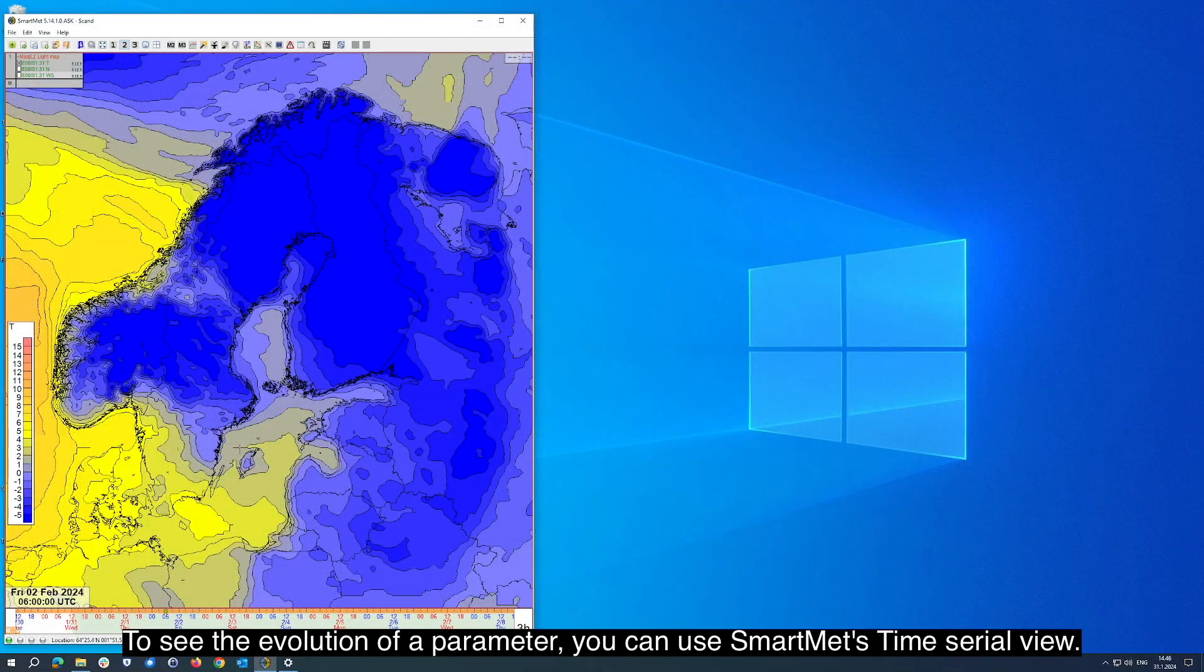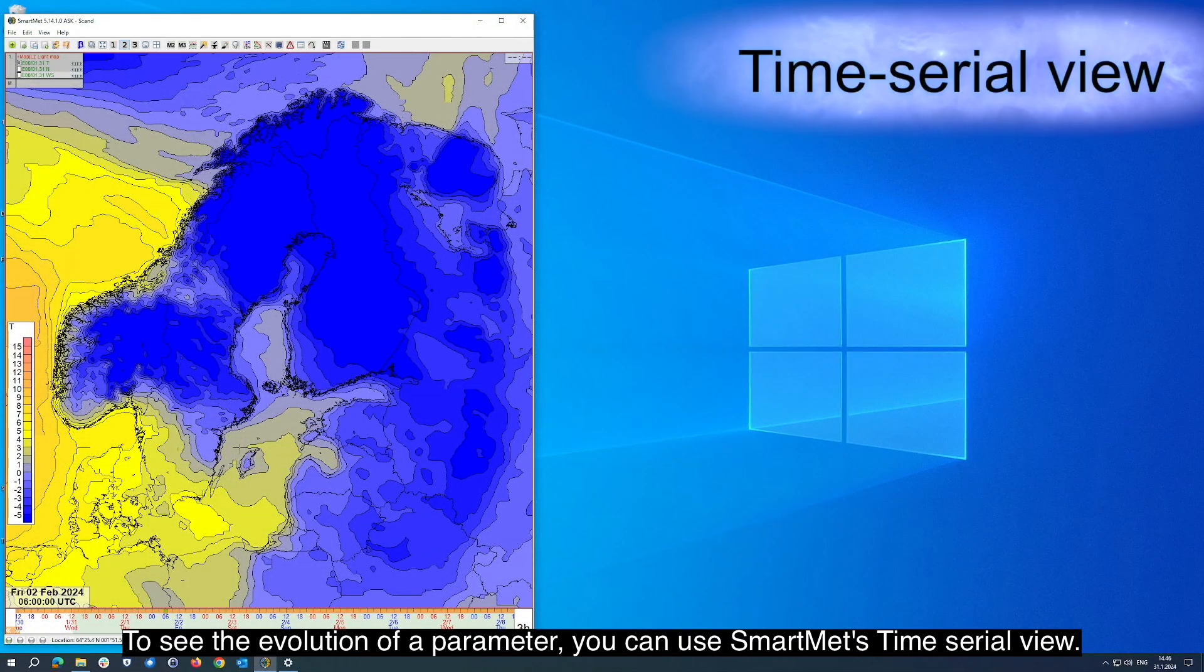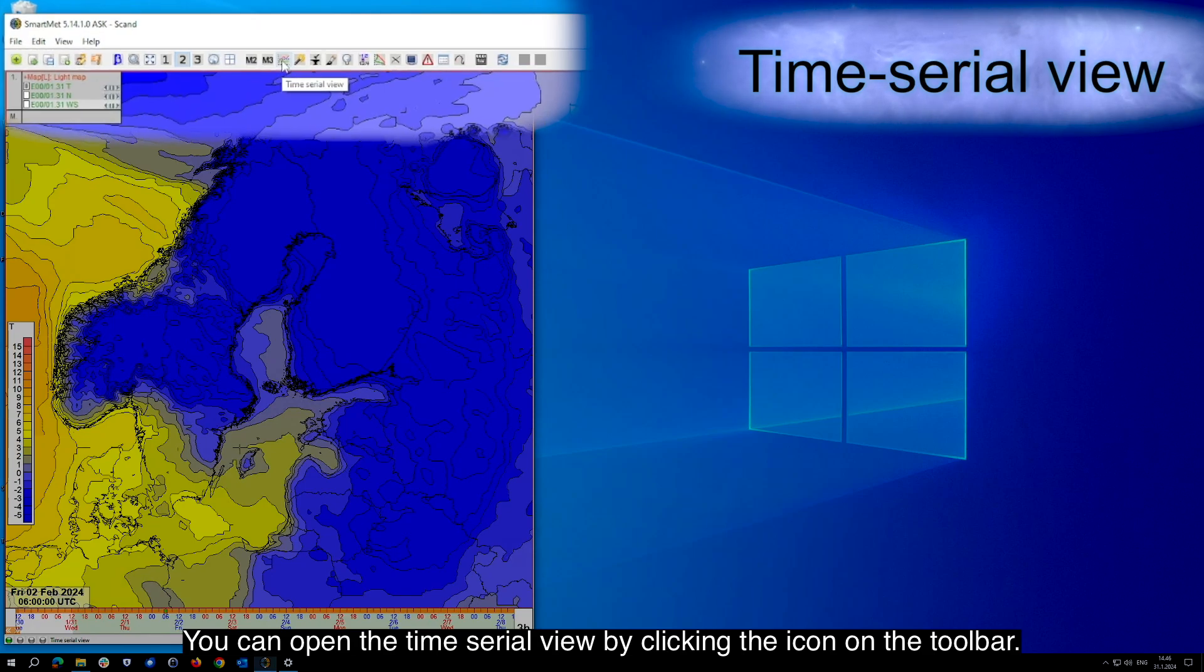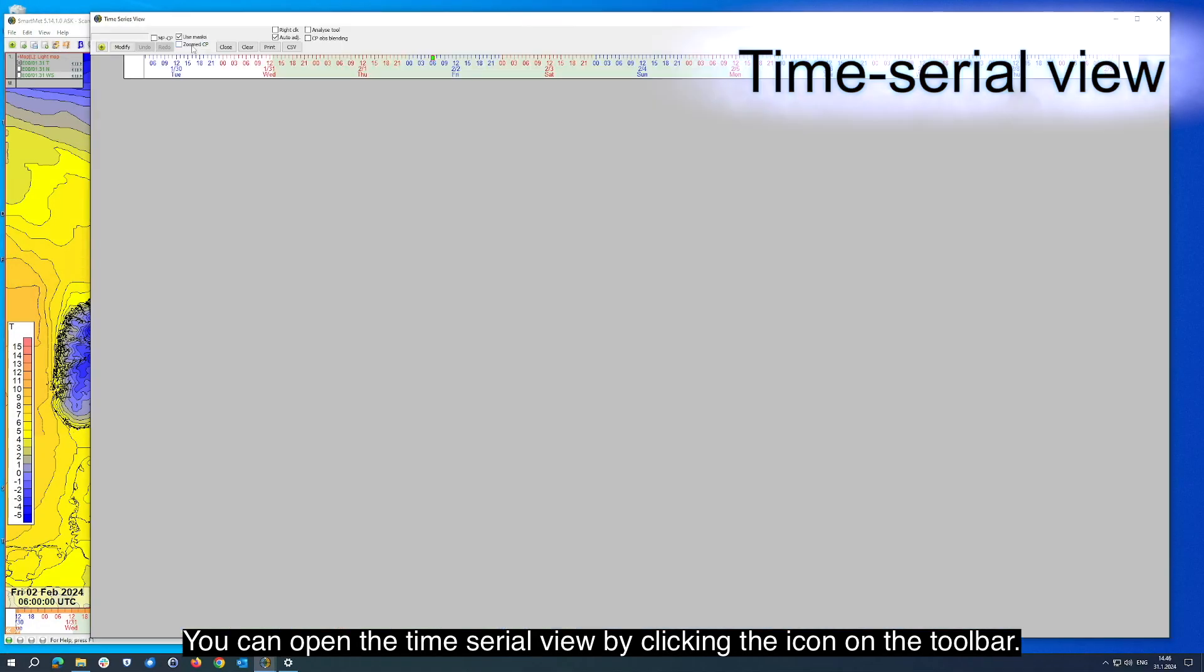To see the evolution of a parameter, you can use SmartMet's Time Serial View. You can open the time serial view by clicking the icon on the toolbar, and it should open something like this. At first it's just empty before you add some data.